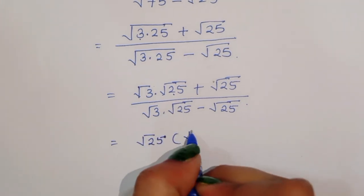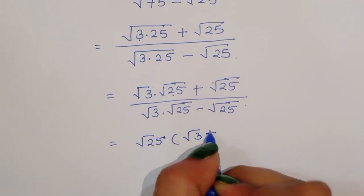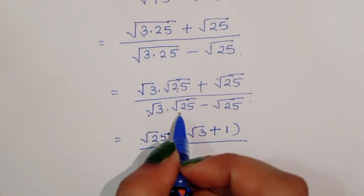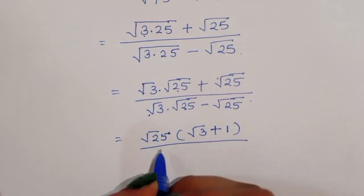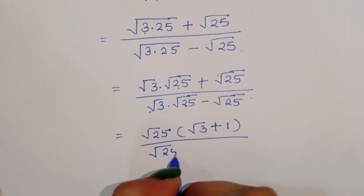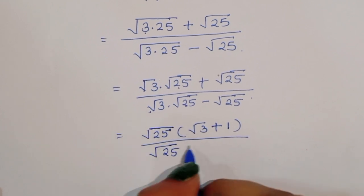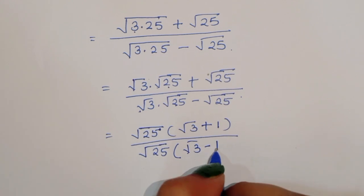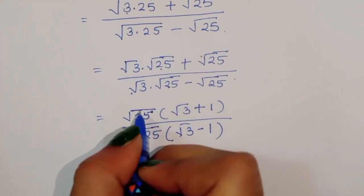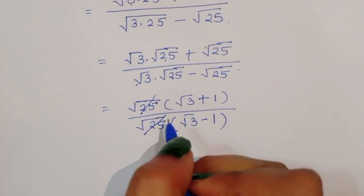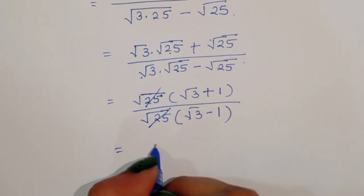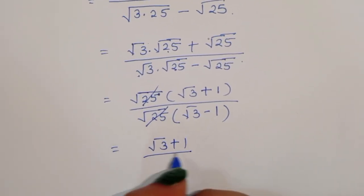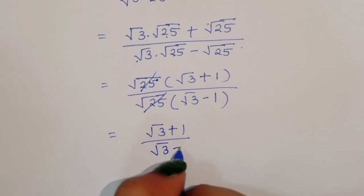In the numerator, after taking square root of 25 common, we get square root of 3 plus 1. In the denominator, taking square root of 25 common gives us square root of 3 minus 1. The square root of 25 cancels from numerator and denominator, so we are left with square root of 3 plus 1, divided by square root of 3 minus 1.